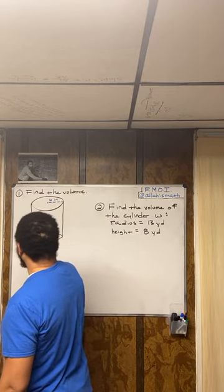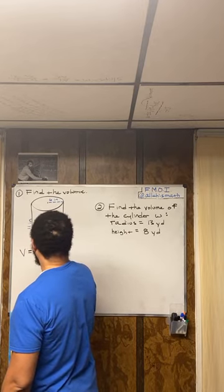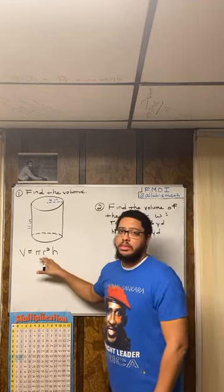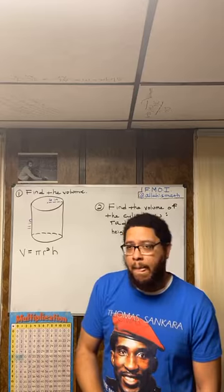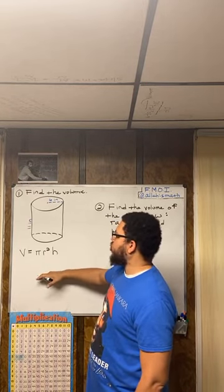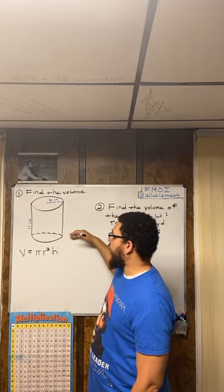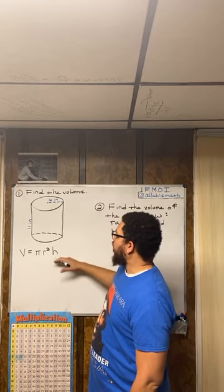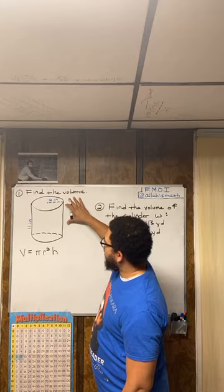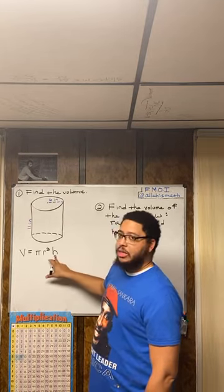Now, the formula for the volume of a cylinder is this, and you should always write your formula down. V = πr²h. And the πr² should look familiar because πr² is the formula for the area of a circle. And if you think about a cylinder, conceptually, all a cylinder is is a bunch of circles stacked on top of each other. That's all a cylinder is. A bunch of flat, real thin circles stacked on top of each other.